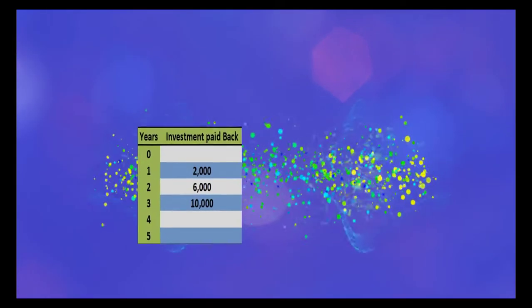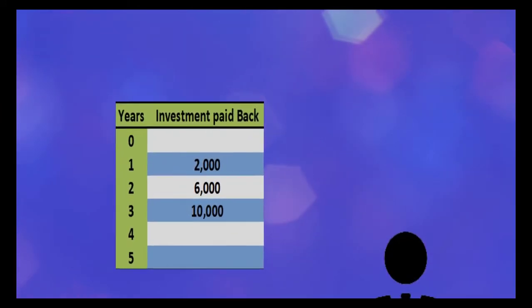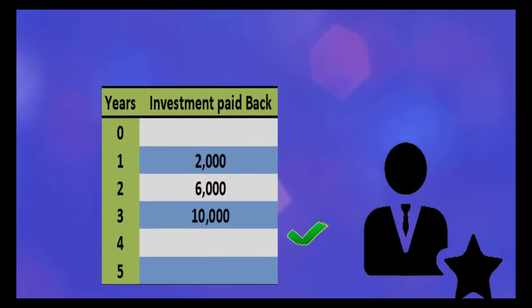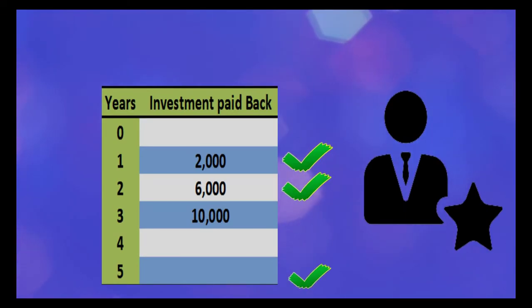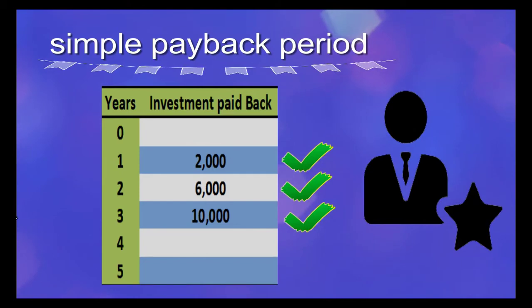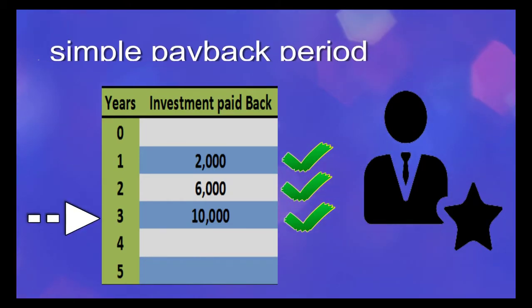By looking at the cash flows stream, you are happy that you will receive $2,000 in year 1, $6,000 recovered in two years, and all your $10,000 recovered in three years. So by simple payback period, you estimate to recover in three years.